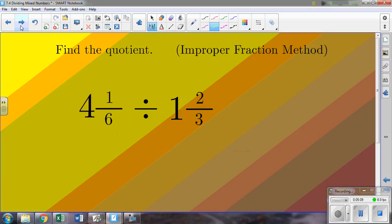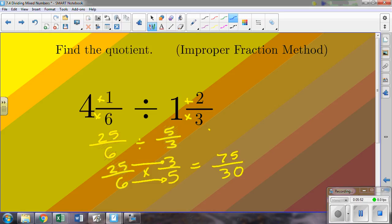4 and one sixth divided by 1 and two thirds. Multiply and add gives us 25, keeping the same denominator of 6. Multiply and add would give us 5 over 3. I know that I could use this cross-multiplying method for dividing. This particular one, though, I actually want to go through multiply the reciprocal just for the sake of showing that we can do it that way. Showing extra work. So multiplying straight across then, 25 times 3 gives us 75, 6 times 5 is 30. So there's our answer, 75 over 30.